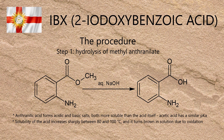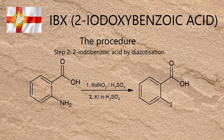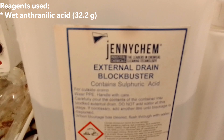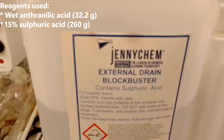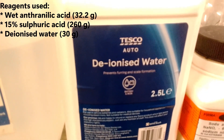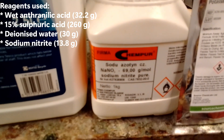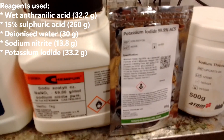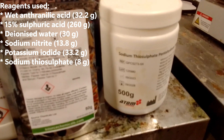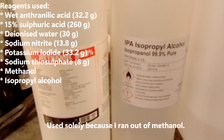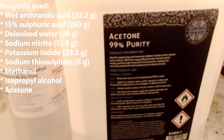The next step was to turn anthranilic acid into 2-iodobenzoic acid, by diazotising the amine group and reacting it with potassium iodide. The reagents used were anthranilic acid from the last step; 15% sulfuric acid, 260g in total; deionised water, 30g; sodium nitrite, 13.8g; potassium iodide, 33.2g; sodium thiosulfate, 8g; methanol; isopropyl alcohol; acetone; and plenty of ice.